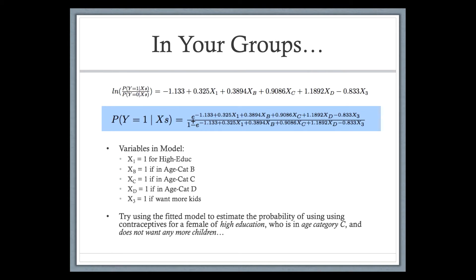A note on the slides: the denominator should be 1 plus e to the negative 1.133 plus so on — it's a plus sign, not a minus. There was a typo in the original graphic; I corrected it with a plus sign but it appears misaligned in full screen. So the probability of using contraceptives is e to the negative 1.133 plus so on, divided by 1 plus e to the negative 1.133 plus so on.